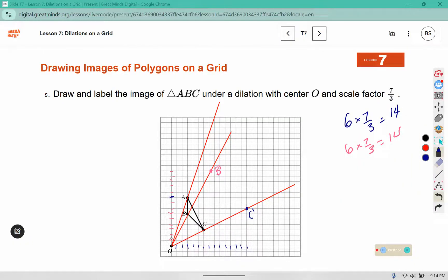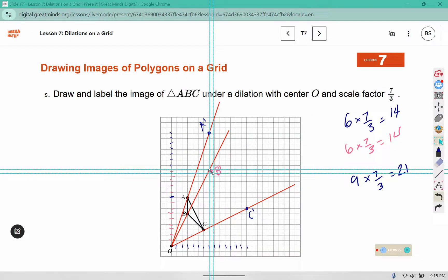And then for A, it is 1, 2, 3, 4, 5, 6, 7, 8, 9, which would be 21. So that would be 14, 15, 16, 17, 18, 19, 20, 21. And it crosses in this location. I'm going to re-examine my line here for B. It should be slightly to the left here. Just redraw it. And then connect them using a straight edge.